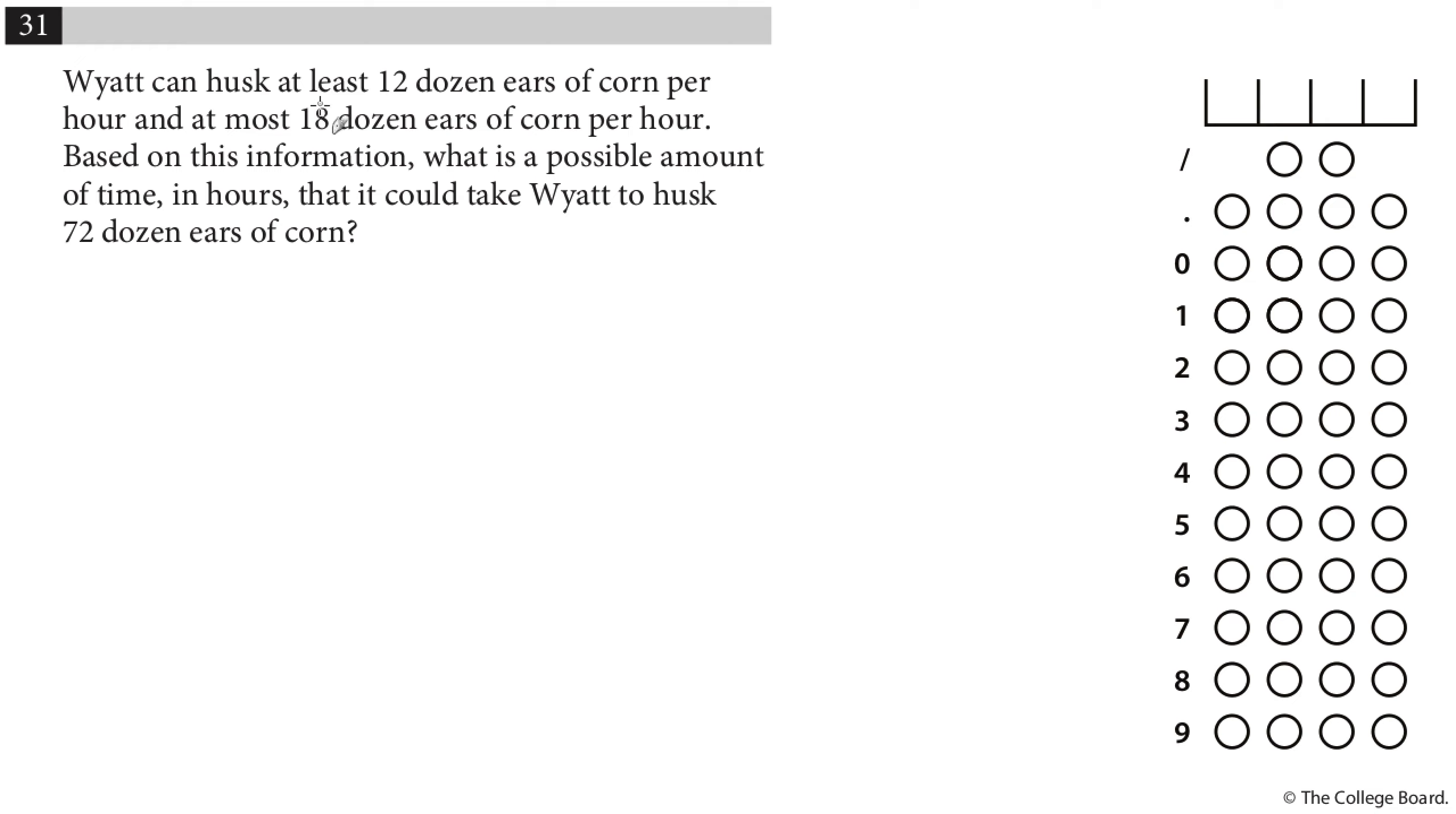Okay, so Wyatt can husk at least 12 dozen ears of corn per hour and at most 18 dozen ears of corn per hour. Based on this information, what is the possible amount of time in hours that it could take Wyatt to husk 72 dozen ears of corn? The quickest way to deal with this is, let's say, the slowest he goes - I'll do slow in red - is 12 dozen ears of corn per hour. So the slowest would be 72 divided by 12. There's 72 dozen to do, he would do 12 per hour, and through that division I don't need to go to the calculator, that's going to be 6 hours. That's the slowest.